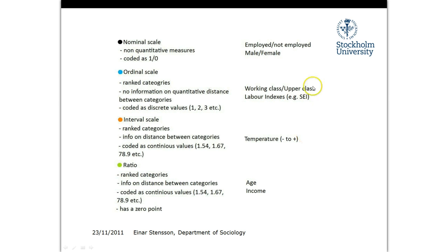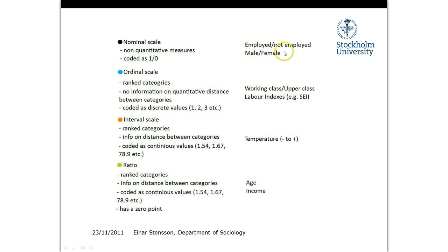I should mention that you could code age in a different scale — you could put age into nominal scale if you just changed the way you defined age. You could put working and upper class in ratio scale if you changed it to some kind of economic measurement. So we can actually move these around depending on how we define them. The important point is not which social phenomenon is placed in which scale, but rather the characteristics of each scale — that's what you need to learn.